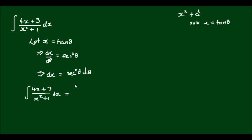So the integral of 4x is now equal to the integral of 4 tan theta plus 3 all over tan squared theta plus 1, times sec squared theta d theta.